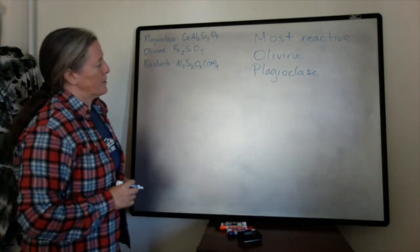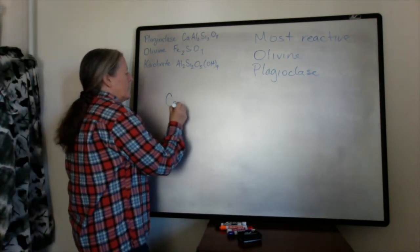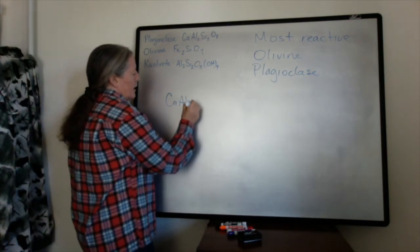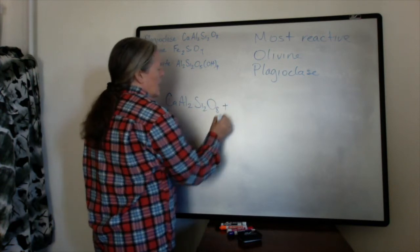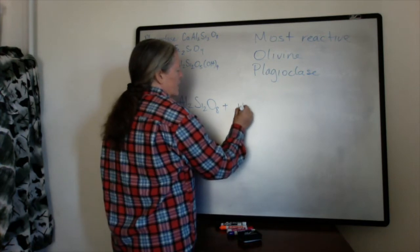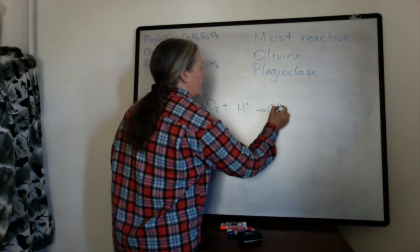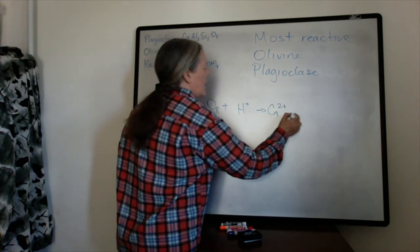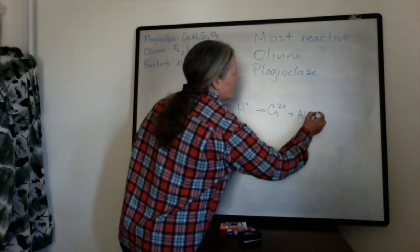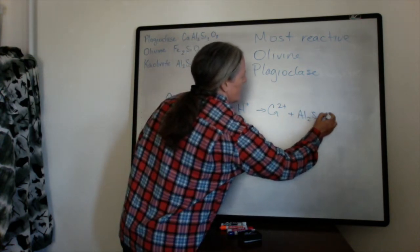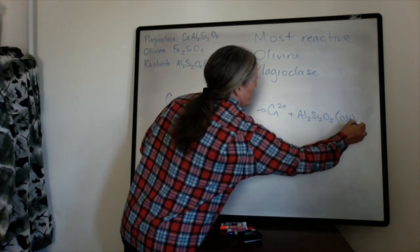I'd like to talk about plagioclase weathering first. So we have calcium, aluminum, silica, and oxygen, and it reacts with acidity to form calcium ions and the clay mineral kaolinite, which has Al2Si2O5OH4.